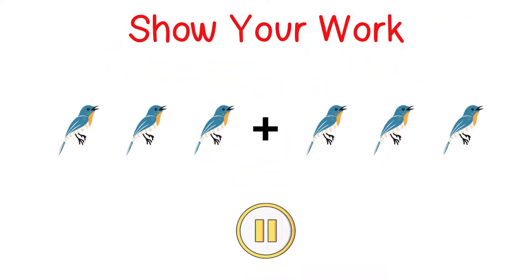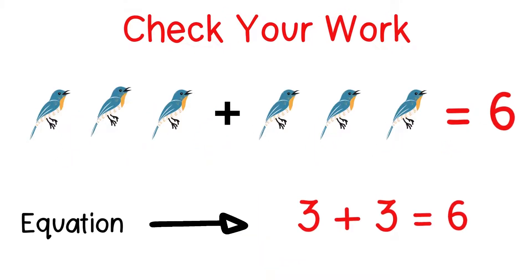Here's my picture to represent what happens if we start with three birds in the tree and then three more come along. Now it's time to add up all the birds. If we start with three and add three more, the total number is six. Three plus three equals six. Notice the equation I wrote on the bottom of the screen and how it matches what happened in the problem.